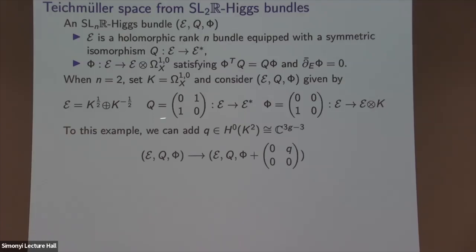This is an example of an SL(2,ℝ) Higgs bundle — somehow the most important Higgs bundle in my life. To this example I can add a quadratic differential Q, a holomorphic section of K². By Riemann-Roch, this is a complex vector space of dimension 3g-3. I add it to the Higgs field as the coefficient in the upper right corner: [0, Q; 1, 0]. That entry is a map from K^{-1/2} to K^{1/2} twisted by K — exactly a quadratic differential.